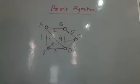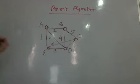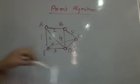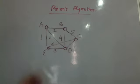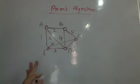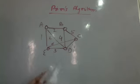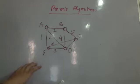When talking about Prim's algorithm, in Kruskal's algorithm we arrange the edges in minimum order and pick up edges with minimum weight one by one. This is not what happens in Prim's. In Prim's, instead of beginning with the edges, we begin with the nodes.